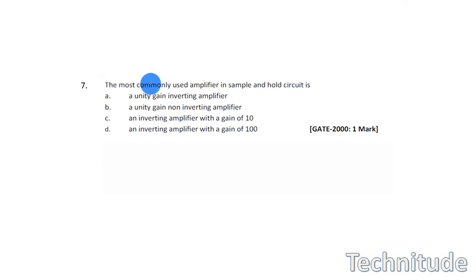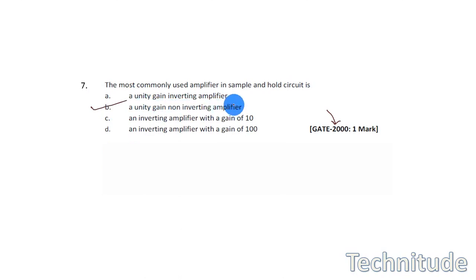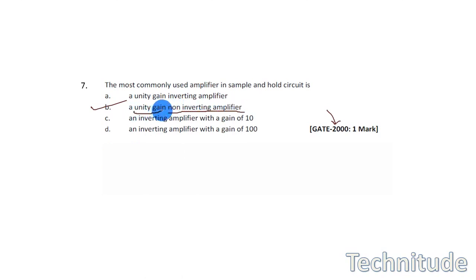The next question from GATE 2000 asks: the most commonly used amplifier in a sample and hold circuit is — this is a memory-based question. The answer is a unity gain non-inverting amplifier, because the polarity and amplitude of the samples must remain the same. A non-inverting amplifier preserves polarity and amplitude, and unity gain keeps the voltage level unchanged.